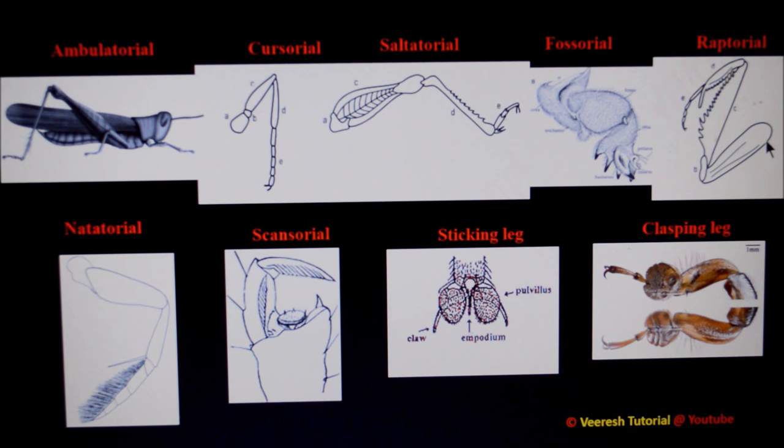The next type is raptorial legs, present in the forelegs of praying mantis. Here, the coxa is very long. The inner surface of the femur and tibia is provided with spines. This type of leg is suited for grasping or capturing prey, so raptorial legs are also called grasping legs.